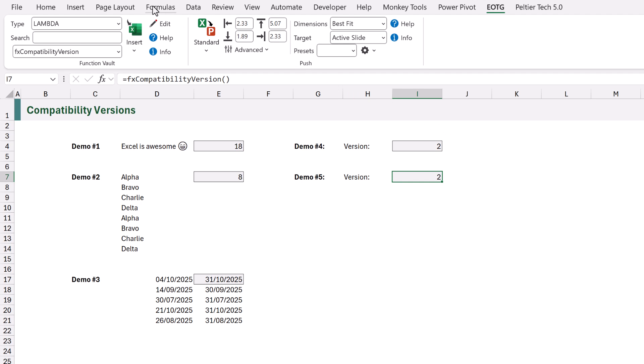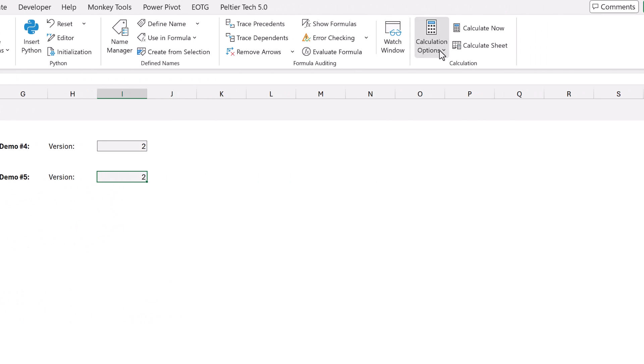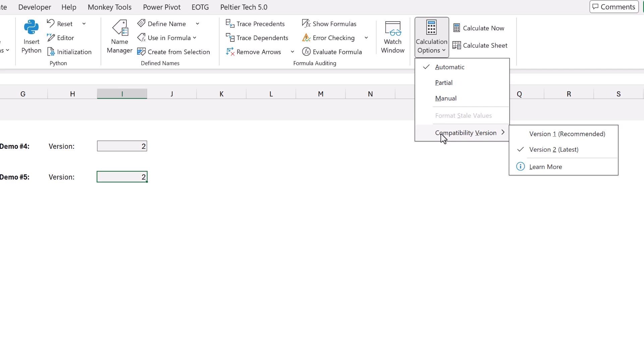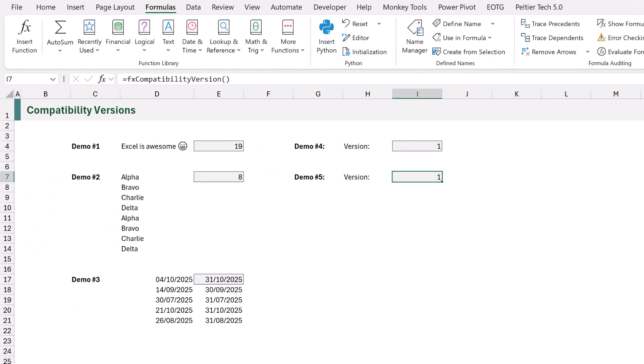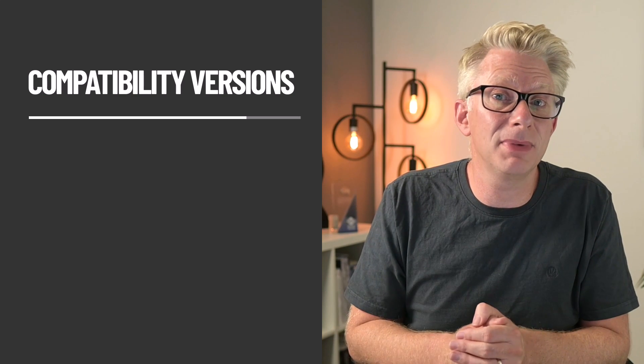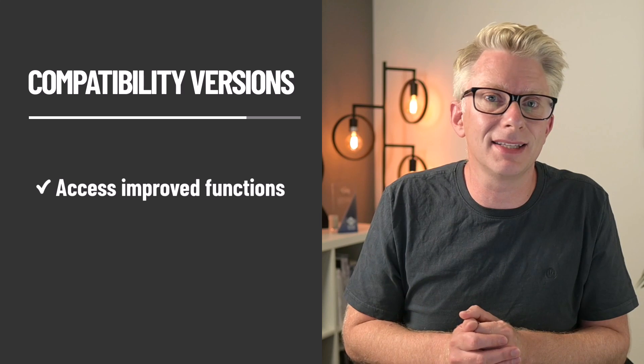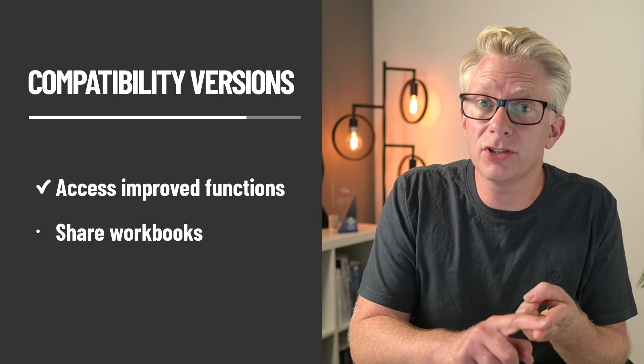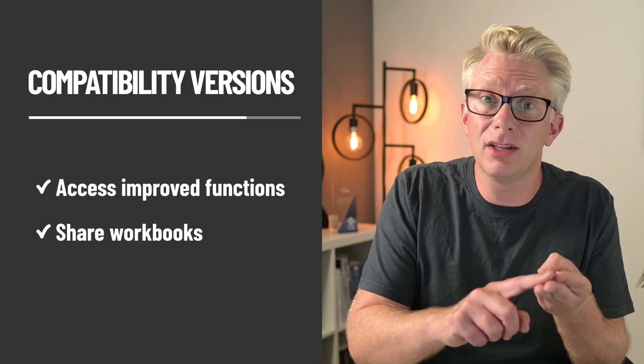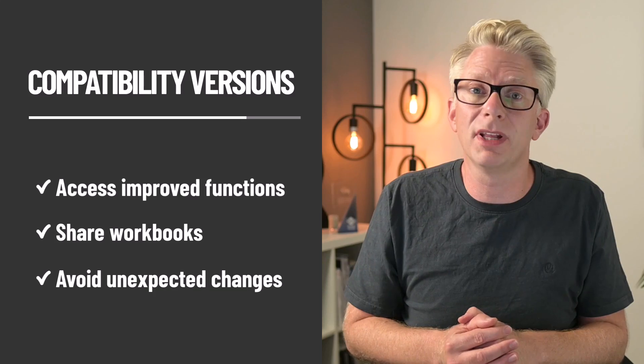Now if we go to Formulas, Calculation Options, and Compatibility Versions and change the workbook to Version 1, that now updates. Currently this setting doesn't exist in Excel Online, but to ensure consistency I'm guessing it must be coming soon. So using compatibility versions we can access improved functions without breaking legacy files, we can share workbooks confidently with colleagues, and we can avoid unexpected formula changes.